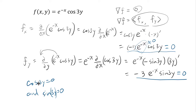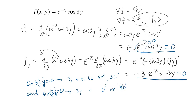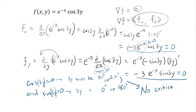That's a problem: for cosine(3y) = 0, we need 3y to be 90° or 270°. For sine(3y) = 0, we need 3y to be 0° or 180° — and you could add any multiple of 360° for coterminal angles. As you can see, there's no way that 3y can be both 90°/270° and also 0°/180°. Since both conditions cannot be satisfied simultaneously, no critical points exist.